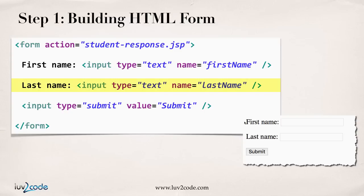Input type equals text, name equals lastName. Finally, for our submit button, we set up an input type equals submit, and we give the value of submit. The value portion is really just the label that you'll see on the submit button. Once they hit the submit button, that data will be sent over to the appropriate JSP page for processing.